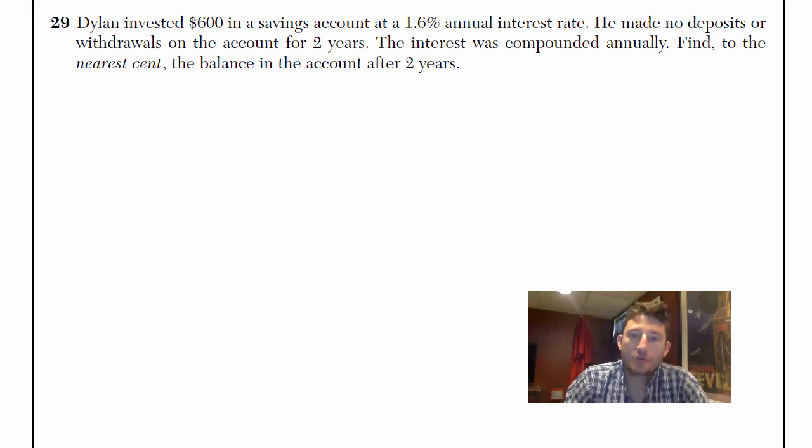All right guys, I'm going to show you how to do compound interest problems. This is number 29. Dylan invested $600 in a savings account at a 1.6% annual interest rate.